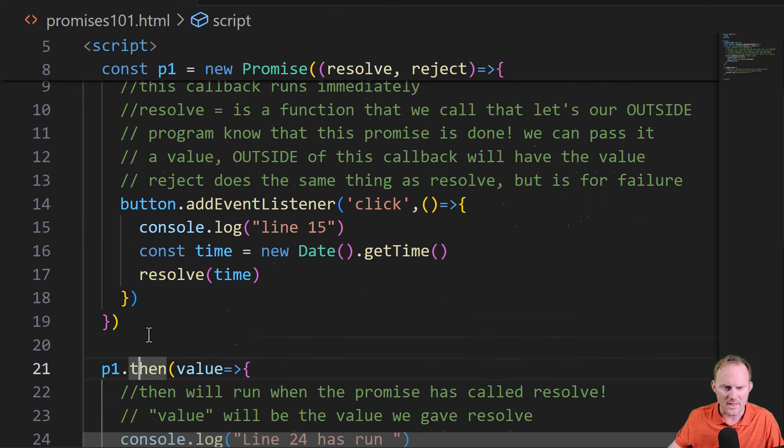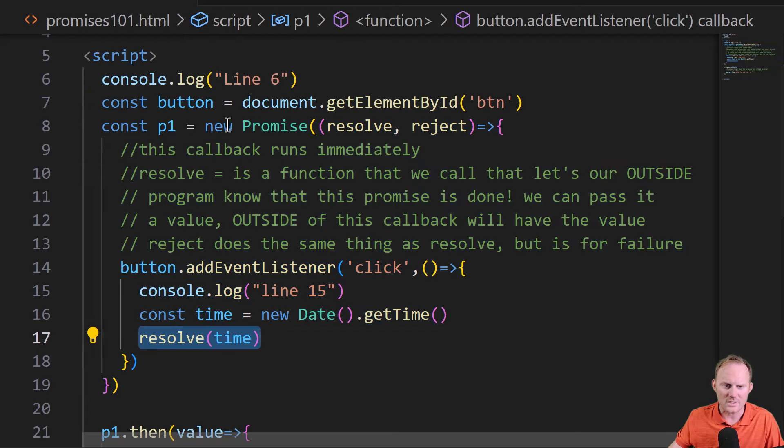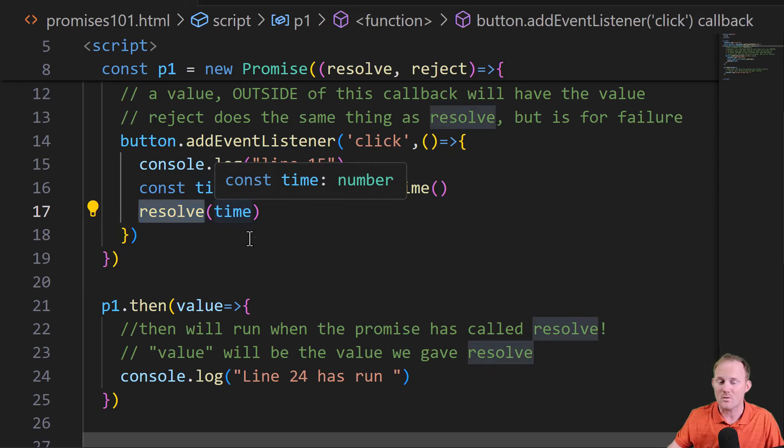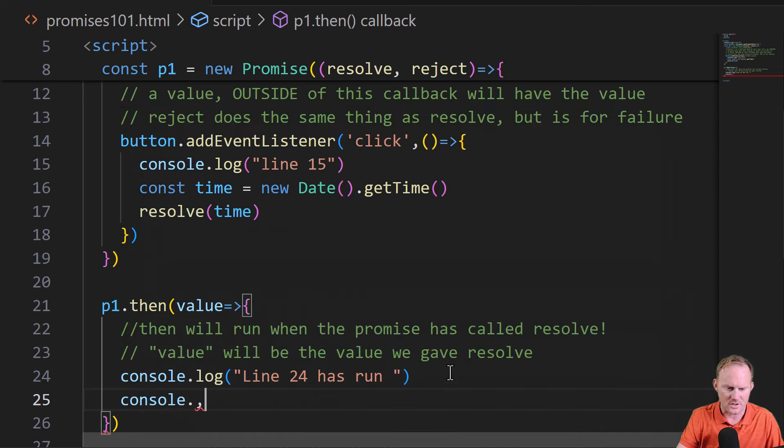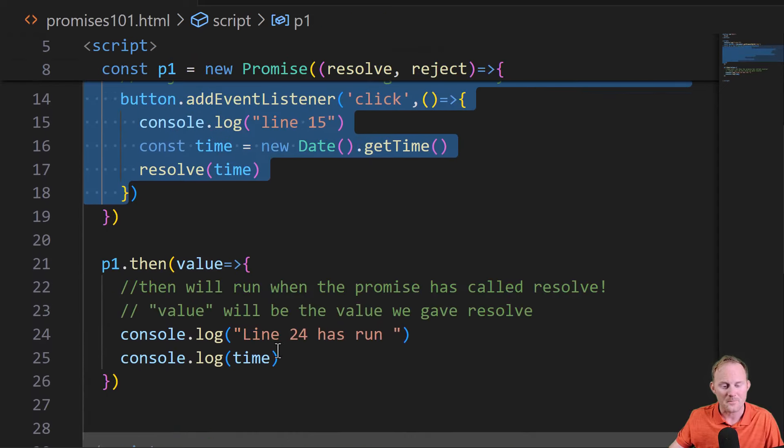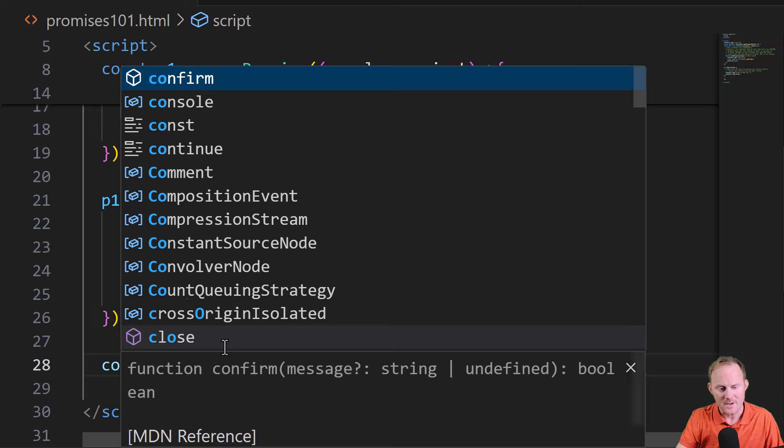Why this resolve? Well, because P1.then, this is our promise. This is our promise callback. Once resolve is called inside here, the then will fire into action. It knows its turn is come and the value will be what? It'll be whatever we handed resolve, which in this case will be time. Now, this is important to remember. We cannot put down here console.log time. This will error because time doesn't exist in the scope. It only exists inside of this function. It can't see time, but it can see value. And value is what we care about. Value is the same thing as time. We sent it over when the function resolved.